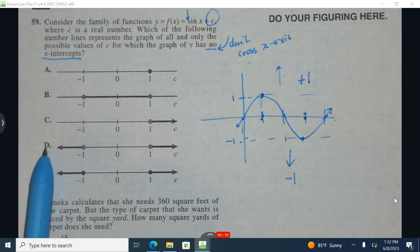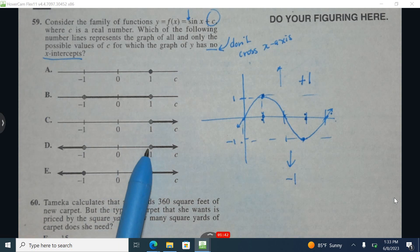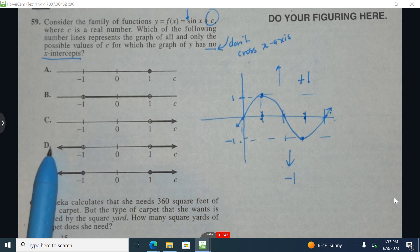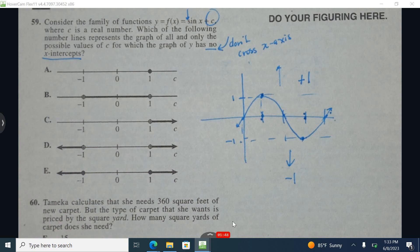And we can see that represented in D. These open circles mean not equal to 1 or negative 1. This means greater than 1 or less than negative 1. The correct answer is D.